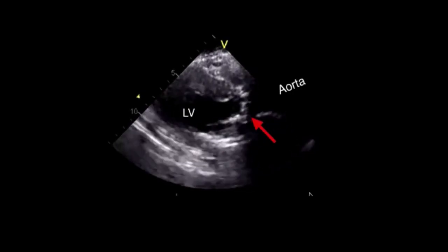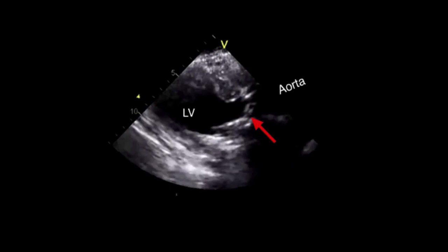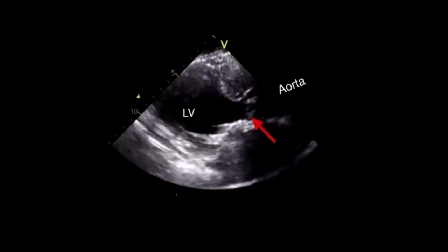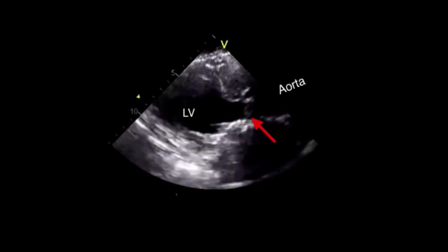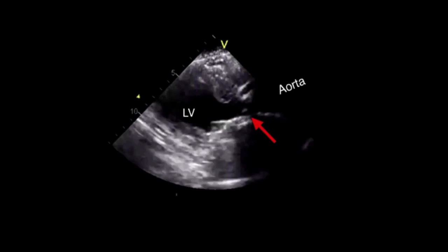So here you actually see the LV, or left ventricle, contracting into the aorta, and the red arrow is looking at the aortic valve, which is actually not opening very much, if you can see that. And so this is aortic stenosis.